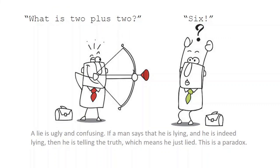A lie is ugly and confusing. If a man says that he's lying, and he's indeed lying, then he's telling the truth, which means he just lied. This is a paradox.